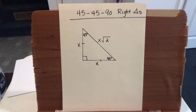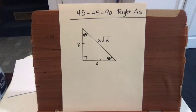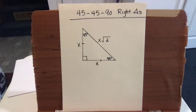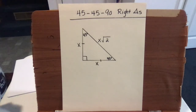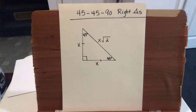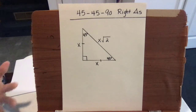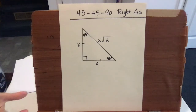Today we're going to take a look at 45-45-90 right triangles. Now up until now, to find any side length of any right triangle, we have used the Pythagorean Theorem. But what will happen now is we'll be missing two sides, so Pythagorean Theorem is a moot point and you won't be able to use it.